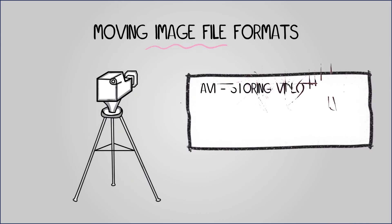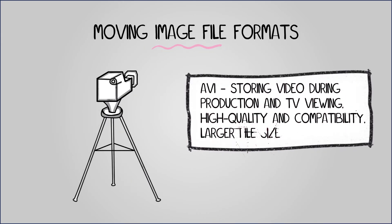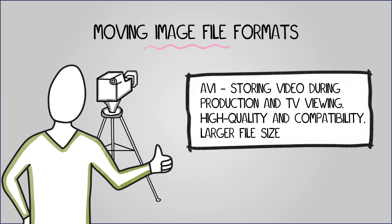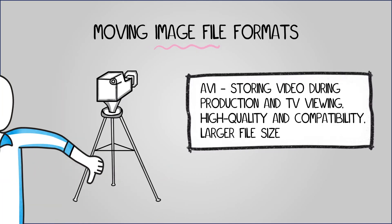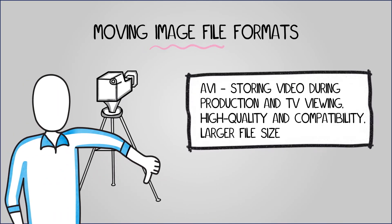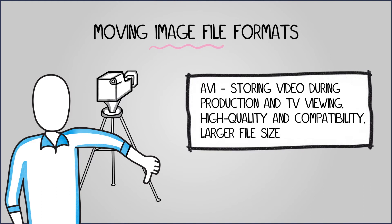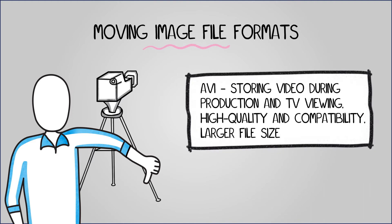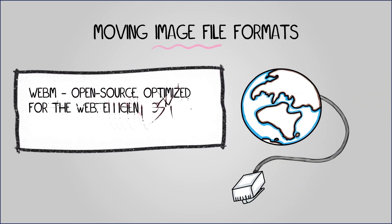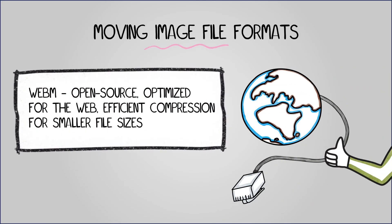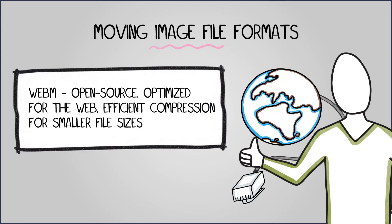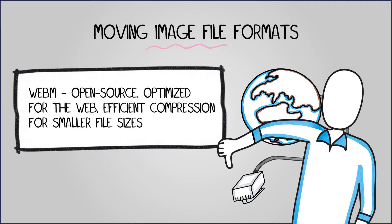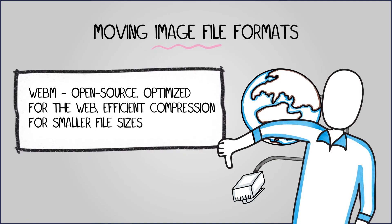AVI is suitable for storing video during production and TV viewing. It offers high quality videos and excellent compatibility with different platforms, especially older ones. However, its less efficient compression leads to larger file sizes, and it cannot be used for streaming video due to the video index location at the end of the container. WebM, an open source format optimized for the web, is ideal for embedding videos in web pages. It offers efficient compression for smaller file sizes and is highly efficient as a streaming video format. However, its compatibility is relatively poor, especially on mobile devices.